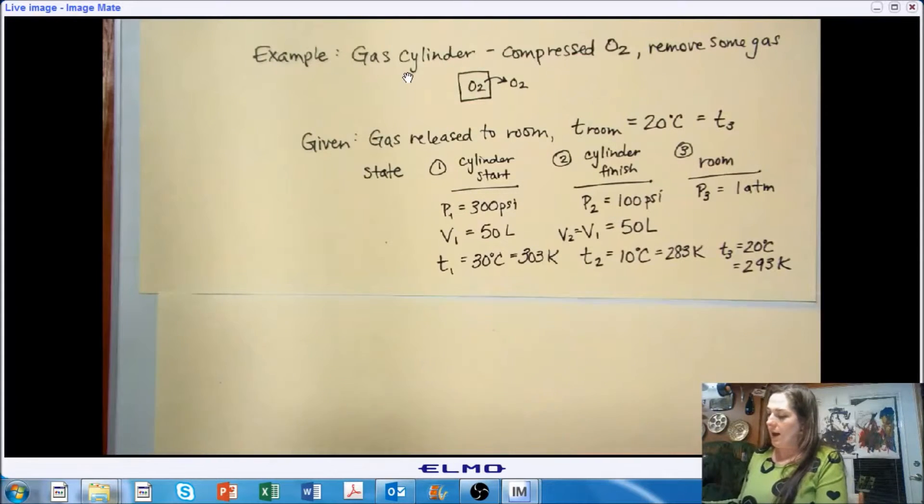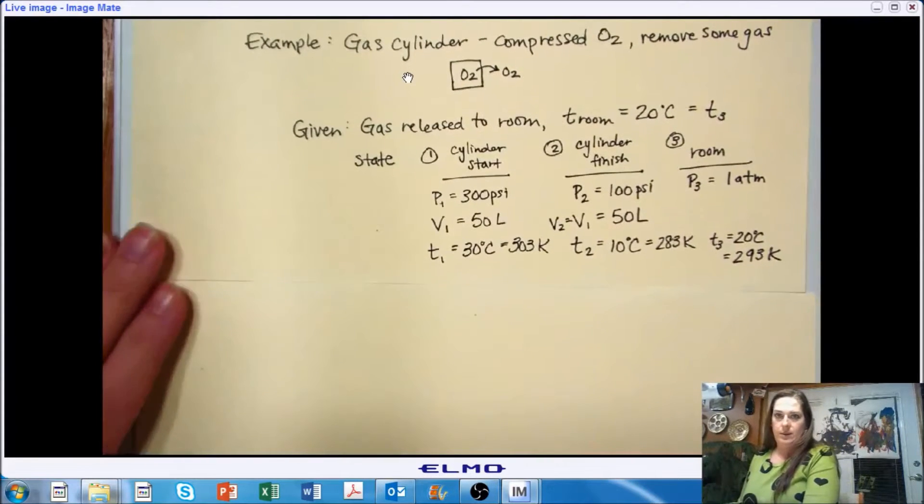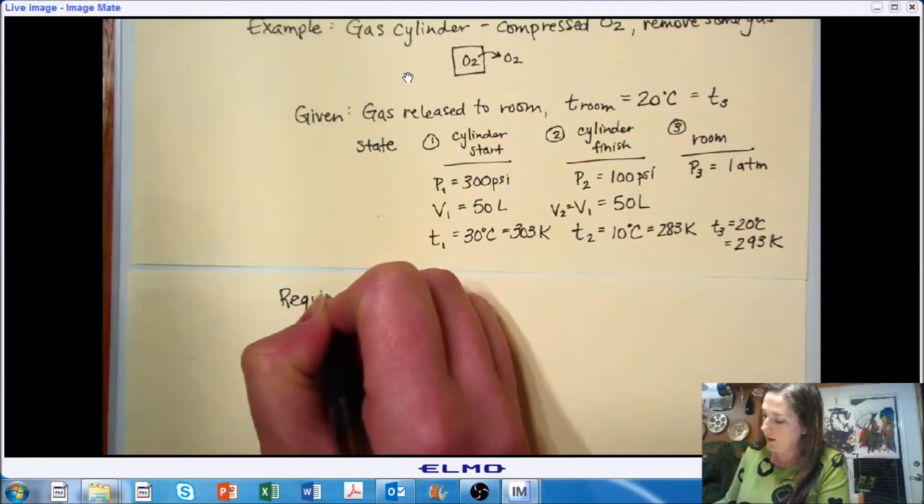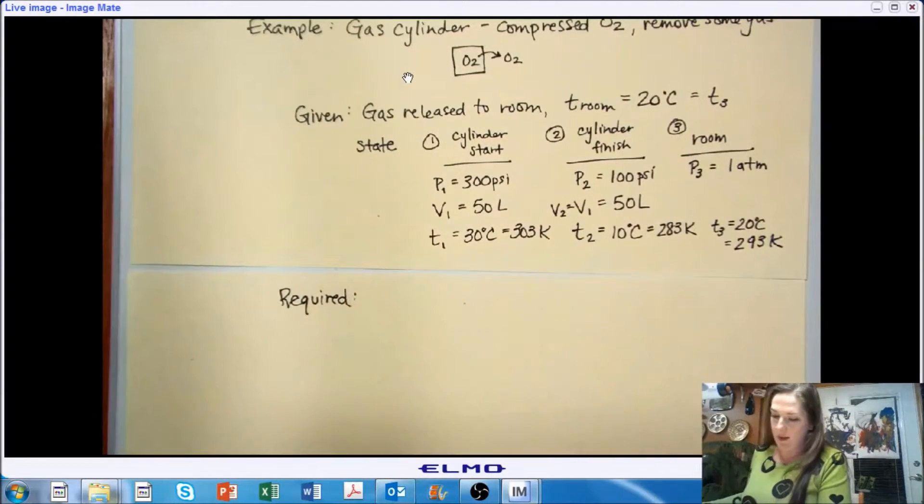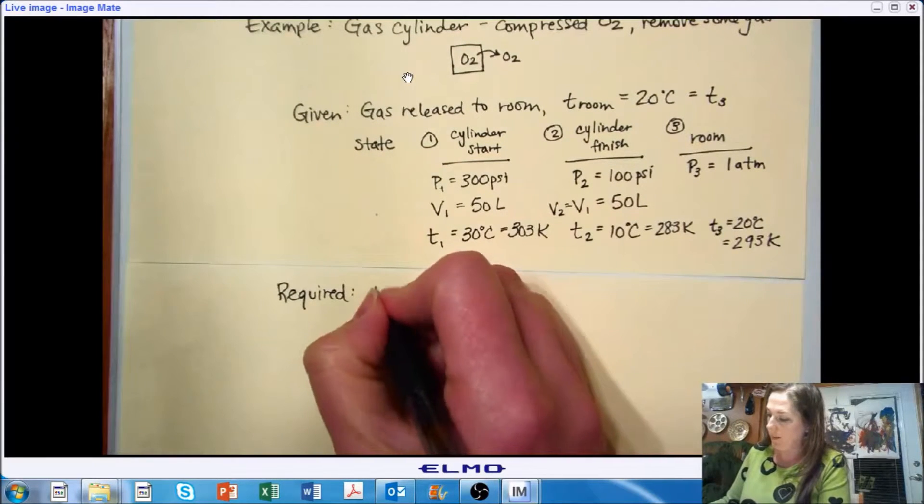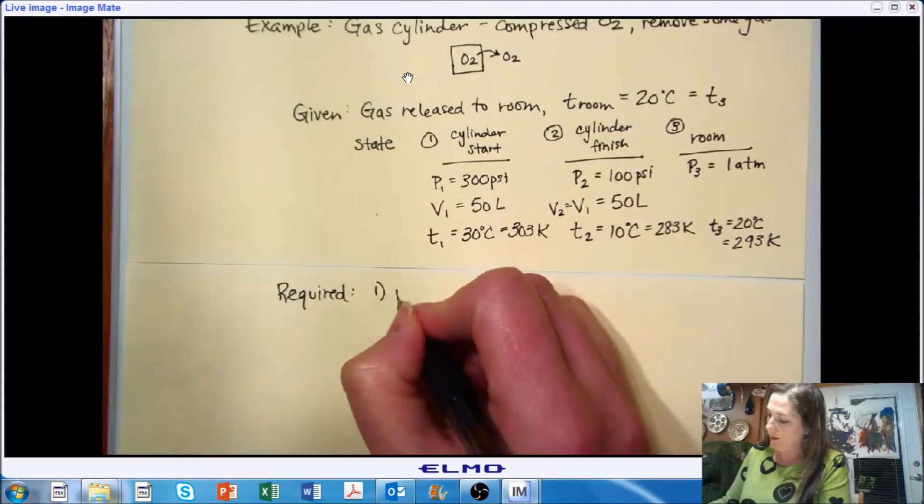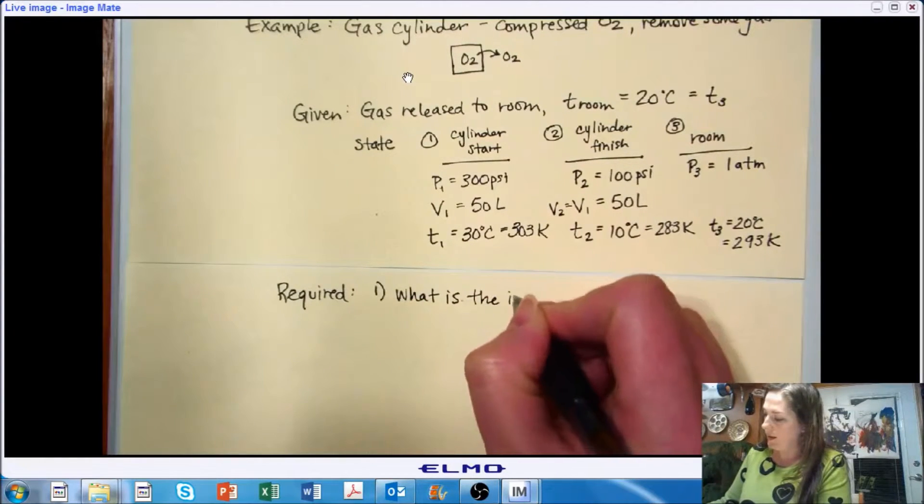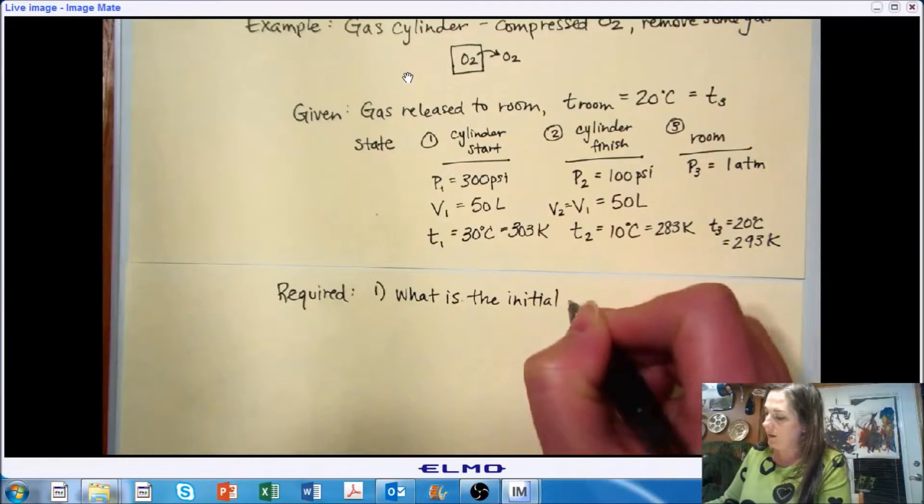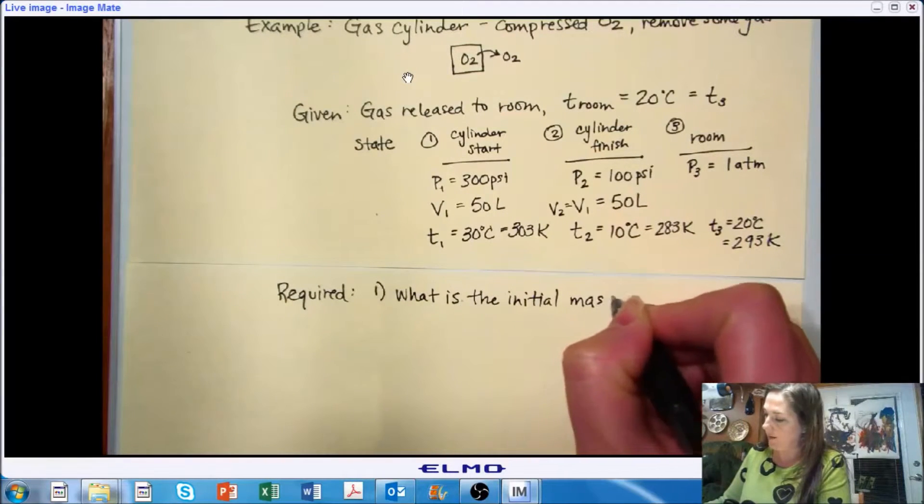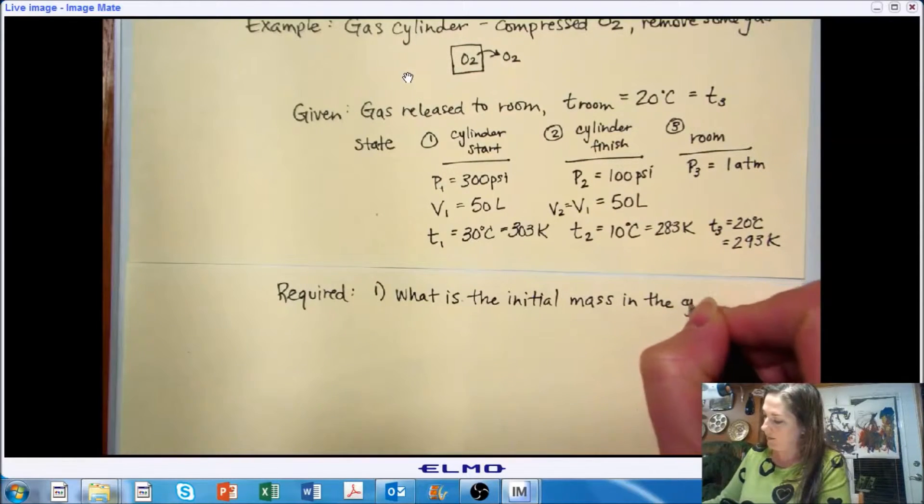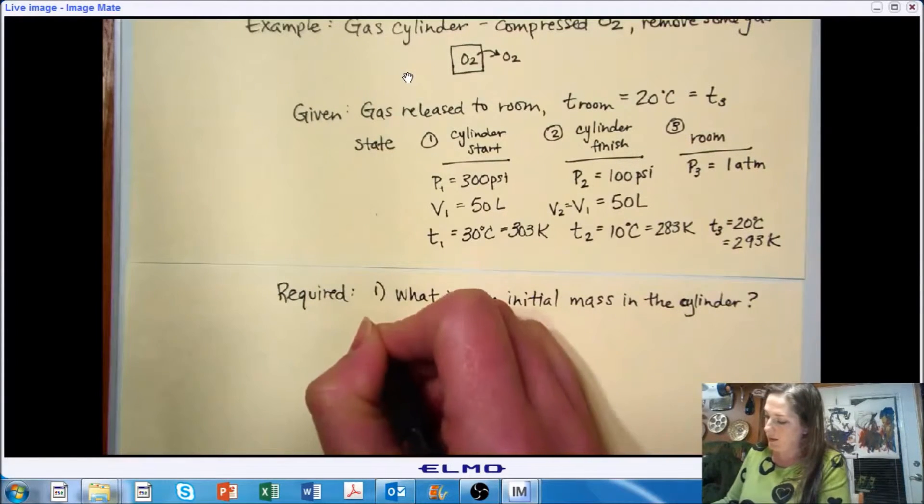All right, so what are we being asked to find? In this example, we're asked to find three things. So the first thing, what is the initial mass of oxygen in the cylinder?